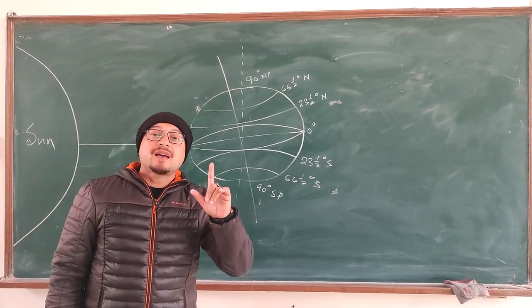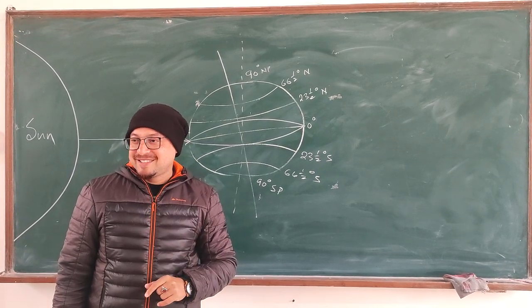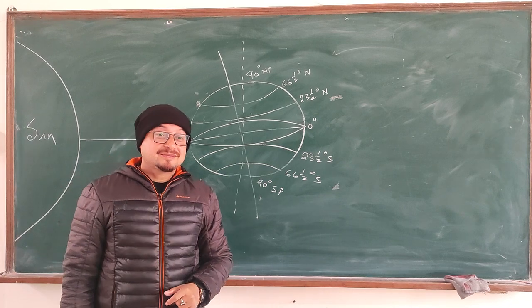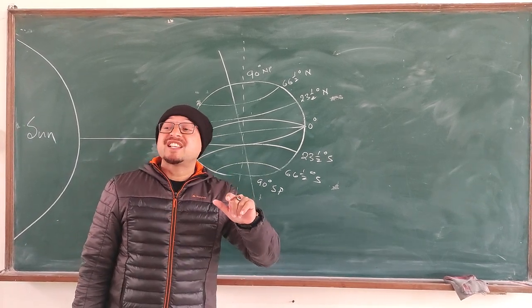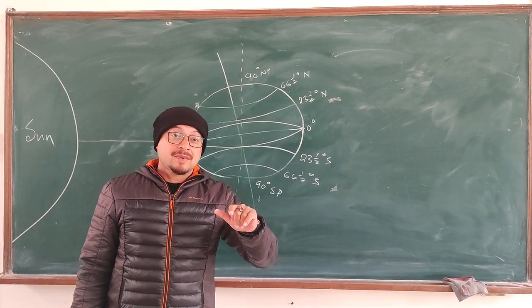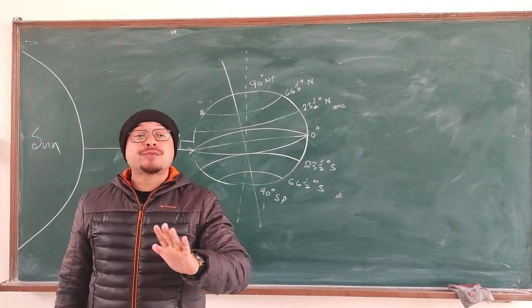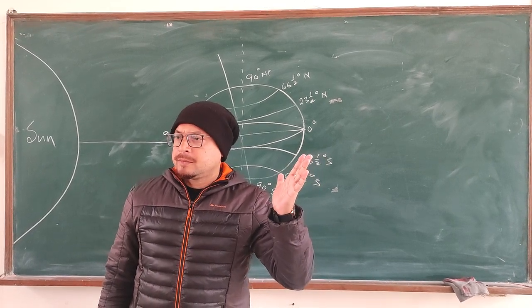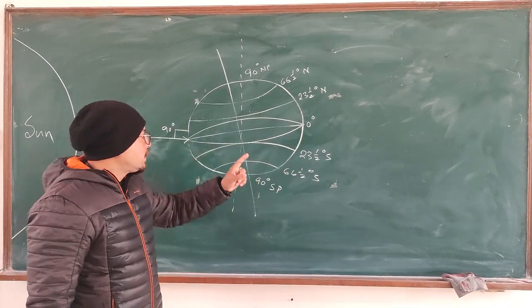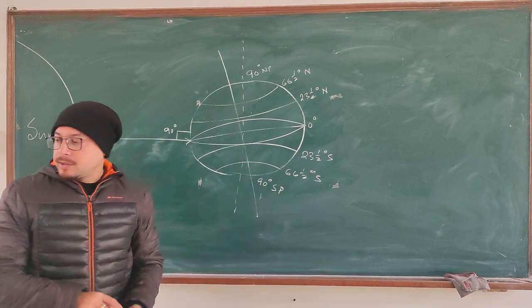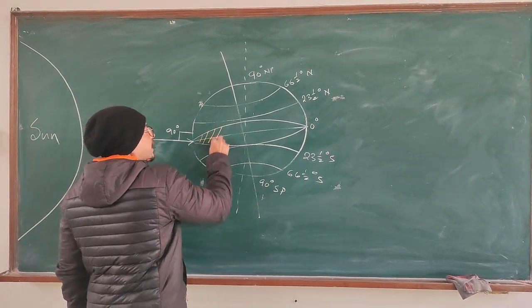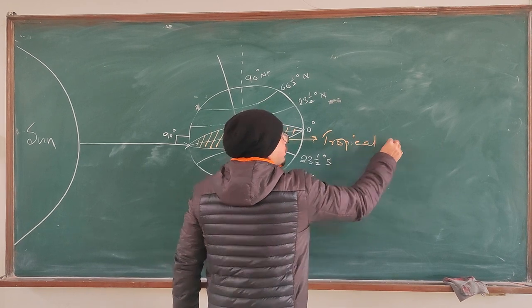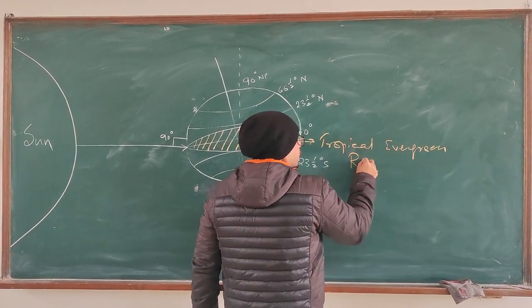So therefore, this particular area all around the equator would have a tropical evergreen rainforest. So it is a type of ecosystem. Why tropical? Because it is found close to the equator. Why evergreen? Because the trees don't shed their leaves all at a time. Why rainforest? Because it rains for at least 330 days and above throughout the year. The tropical evergreen rainforest present all along the equator. So let me shade this area.